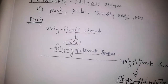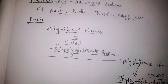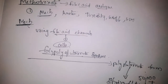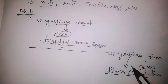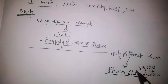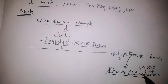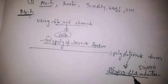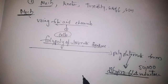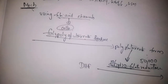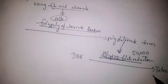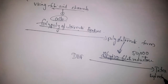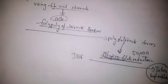Methotrexate competitively inhibits dihydrofolate reductase, with an affinity approximately 50,000 times greater than that of the normal substrate. Due to this inhibition, dihydrofolate is not converted to tetrahydrofolate, meaning tetrahydrofolate is not synthesized.